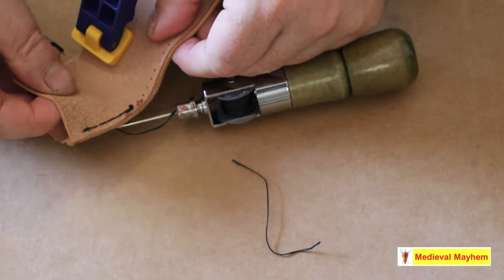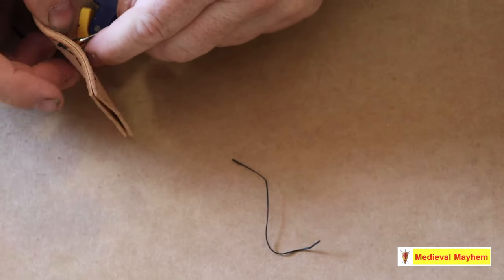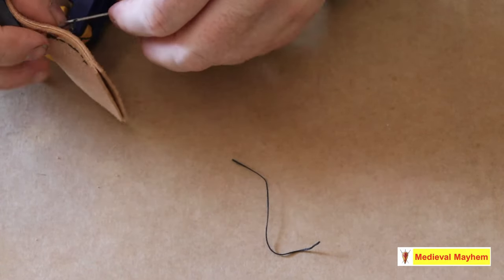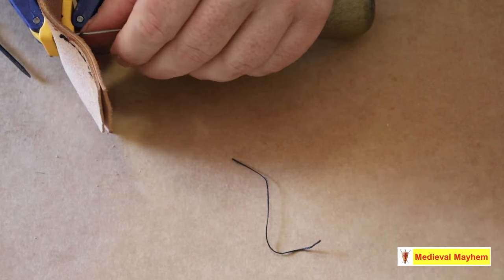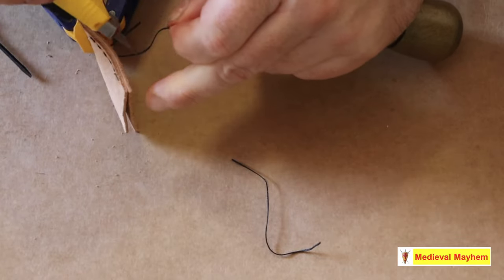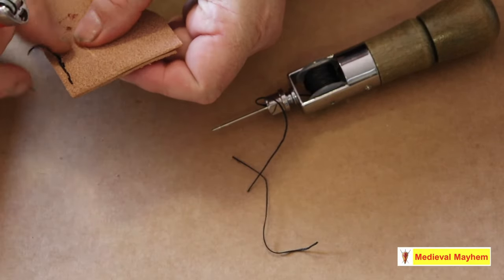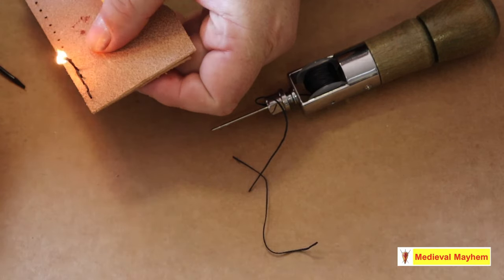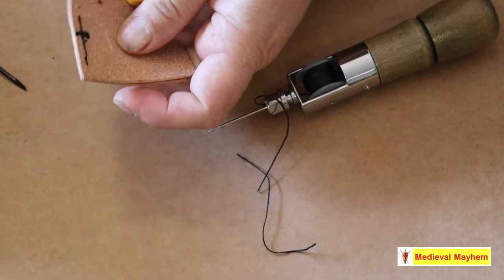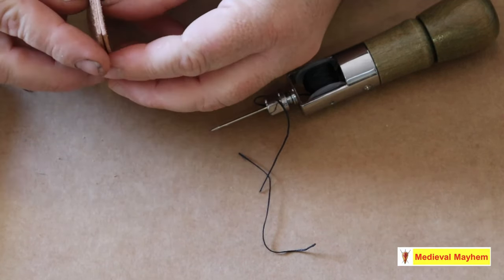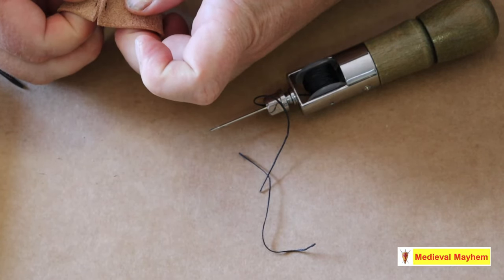And then just use a lighter to melt that down. That's a really nice, strong stitch. As you can see I'm putting a bit of pressure on that. On the other side, just do the same. Just cut off the loose threads. And just use a lighter. There we go. And as I said, it's nice and strong. And that thread, that stitching is not going anywhere.